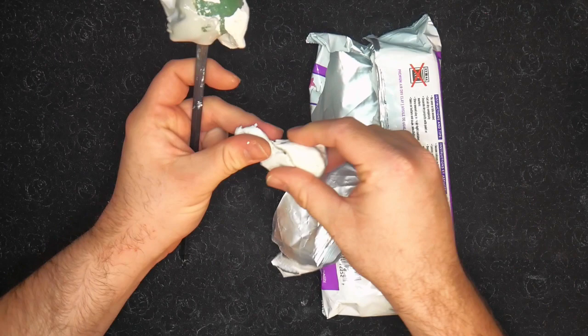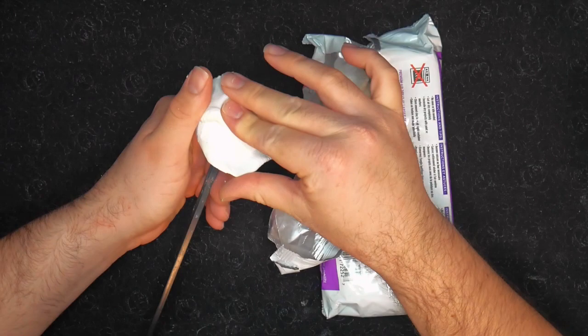Once you have the shape you want, we need to recover her with air dry clay. Smooth it the best you can with water, so that way when we sand it later, it's a little easier.